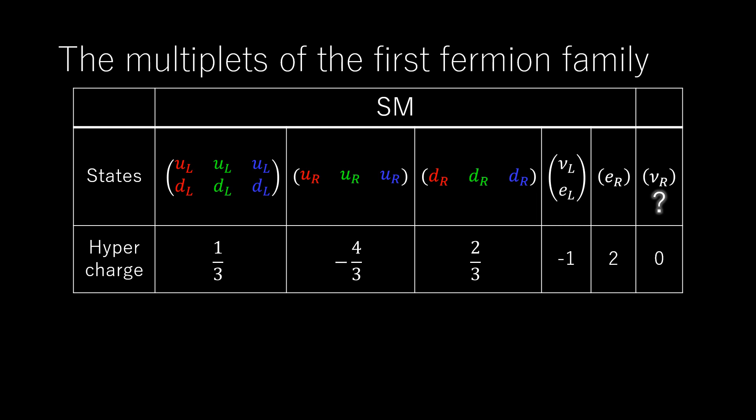Let us ask what would happen if we added a right-handed neutrino multiplet to the five standard model multiplets in each family, making six multiplets in all. In order to ensure that the right-handed neutrino is invisible, we declare that it carries no charge with respect to any of the standard model gauge groups.